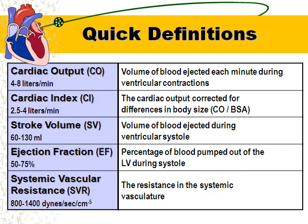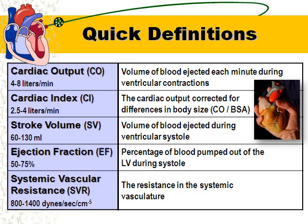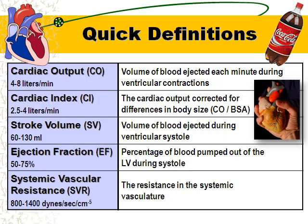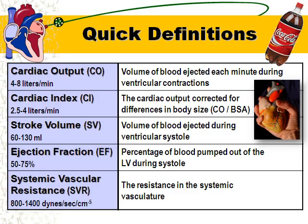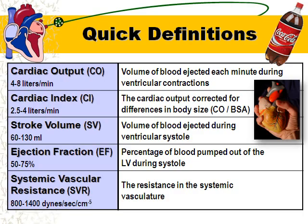Let's look at some quick definitions before we start. Cardiac output is the volume of blood ejected each minute during ventricular contractions. An organ the size of our fist is able to pump out two to four two-liter Coke bottles per minute — pretty incredible. The cardiac index is corrected for the patient's body size, so a little old lady who weighs 80 pounds is not going to have the same cardiac output as a 350-pound linebacker.